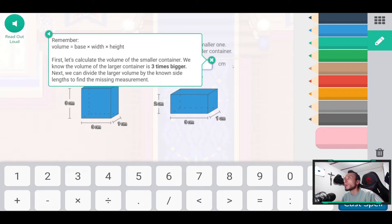First let's calculate the volume of the container with width. The volume of the larger container is 3 times the layer. Next we can divide the larger volume by the size length to find the missing measurement.